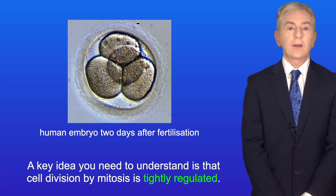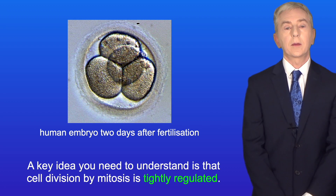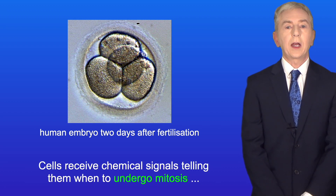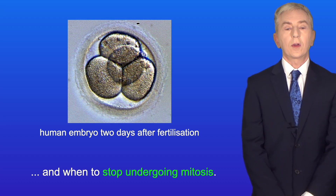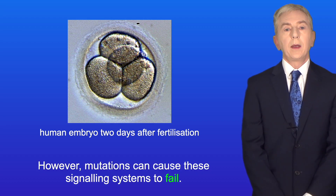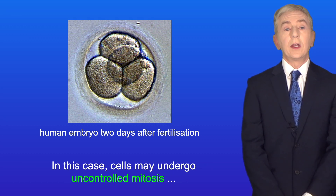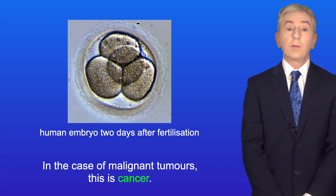A key idea you need to understand is that cell division by mitosis is tightly regulated. Cells receive chemical signals telling them when to undergo mitosis and when to stop. However, mutations can cause these signalling systems to fail, and in this case cells may undergo uncontrolled mitosis leading to a tumour — and in the case of malignant tumours, this is cancer.